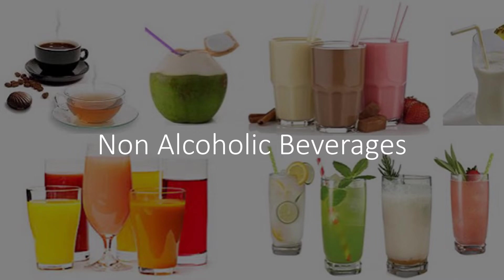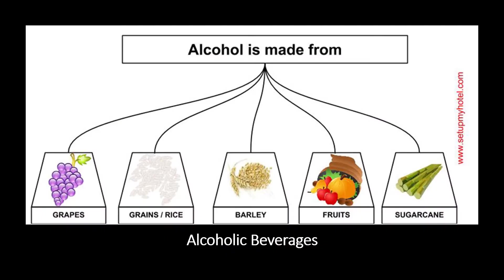We also have flavored sodas or soft drinks. Examples are ginger ale, bitter lemon, tonic, and club soda. To summarize, the non-alcoholic beverages available in bars are water, soda and carbonated drinks, juices, coffee, and flavors. How about alcoholic beverages?